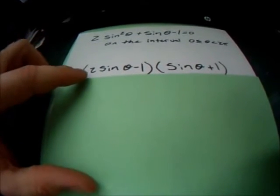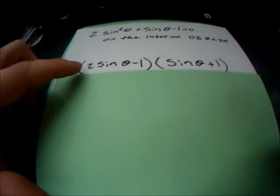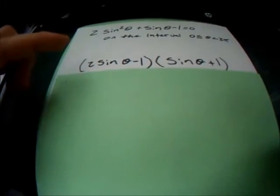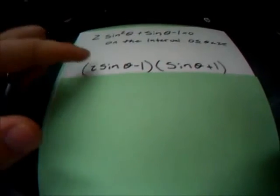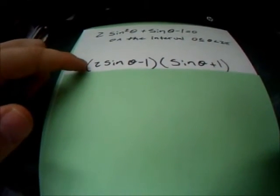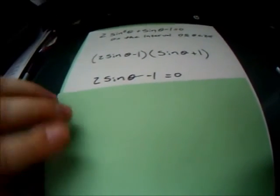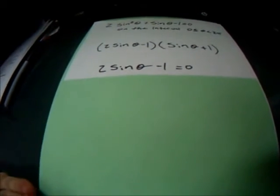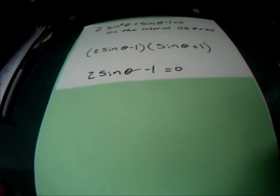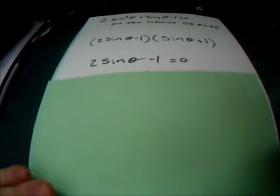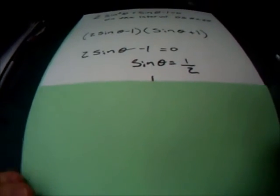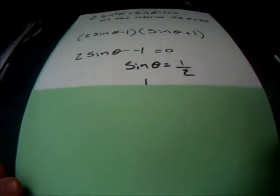What we can do from here is set both sides equal to 0 and then solve. So we're going to work with this first one here and set that side equal to 0. So you get 2 sine theta minus 1 equals 0. We're going to solve that, so you get sine theta equals 1 half.